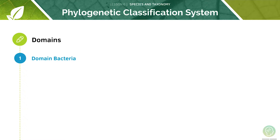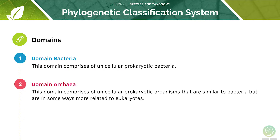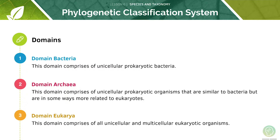Now let's look more closely at domains. All life on earth can be characterised into three domains. The first is domain Bacteria, which is made of unicellular prokaryotic bacteria. The next domain is domain Archaea, which is made of unicellular prokaryotic organisms that are similar to bacteria but are in some ways more related to eukaryotes. Domain Eukarya is made up of all unicellular and multicellular eukaryotic organisms.